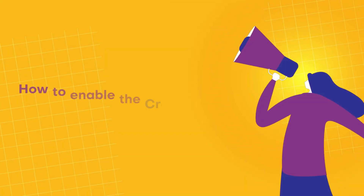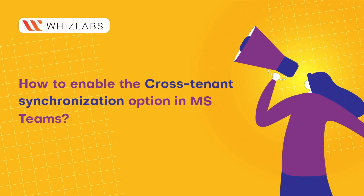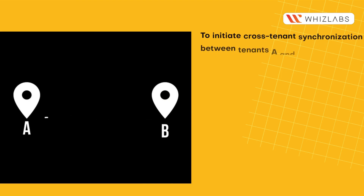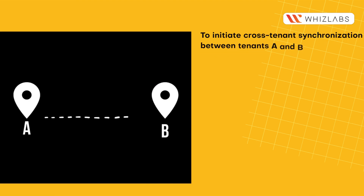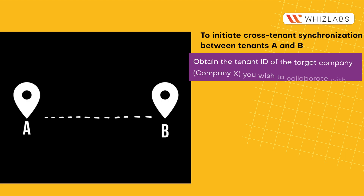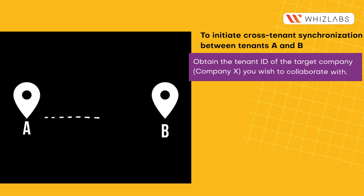How to enable the cross-tenant synchronization option in MS Teams. To initiate cross-tenant synchronization between tenants A and B, obtain the tenant ID of the target company, Company X, you wish to collaborate with.